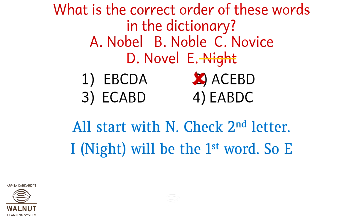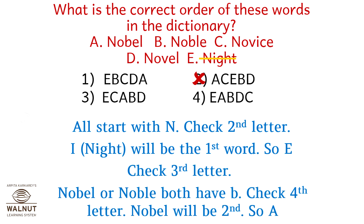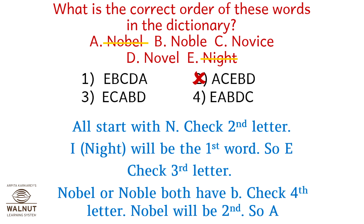Cancel out option 2. Then check the third letter. The third letter of Nobel and Noble both have B, so check the fourth letter. Nobel will be second, so A will obviously be the second in the following sequence. Cancel out options 1 and 3. The correct answer is option 4: EABDC.